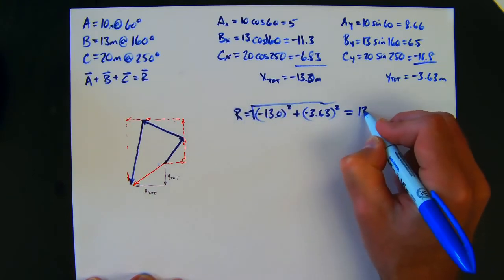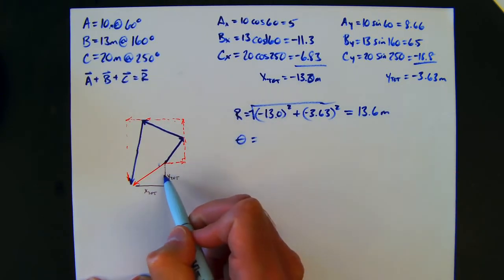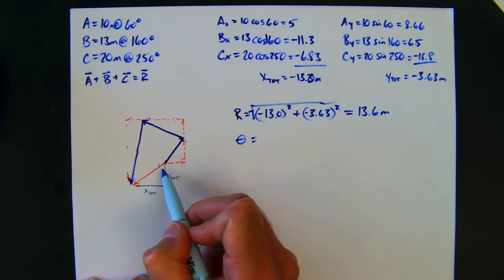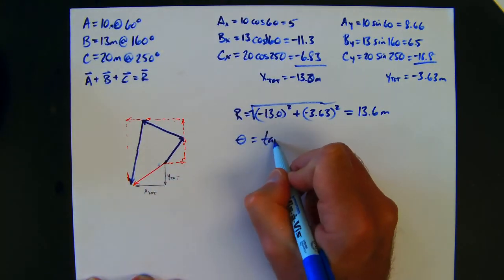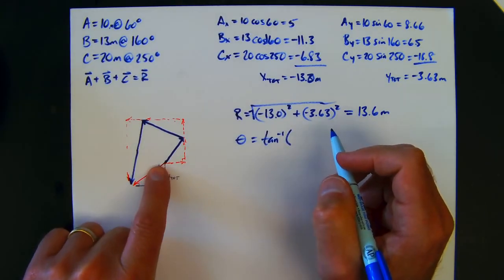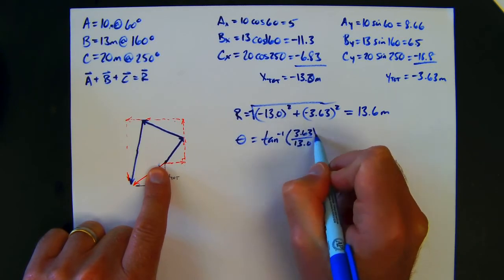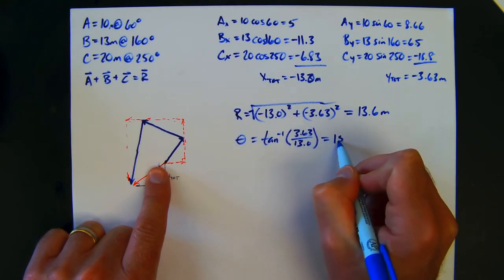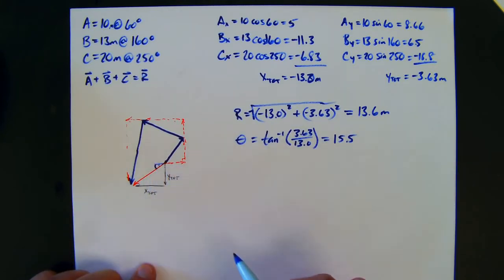And then to find the angle, I'm going to look at this as if I flip this into the third quadrant. Then I'm going to say the inverse tangent, and I'm going to do y over x if I put it up into this side, so I'll have the 3.63 over the 13.0, and that's going to give me 15.5 degrees. But remember, that's only going to be this angle, so I still have to add that to 180 to get 195.5 degrees.